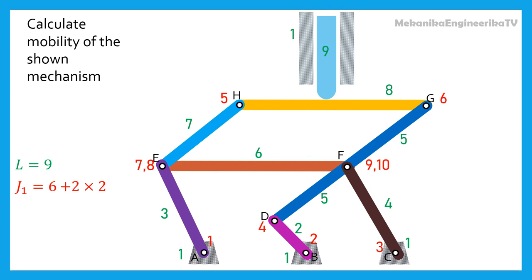There is one prismatic or translating joint between the follower rod and the ground. Thus the number of lower pairs is 11. There is one higher pair, the simple contact between bar HG and the follower rod.